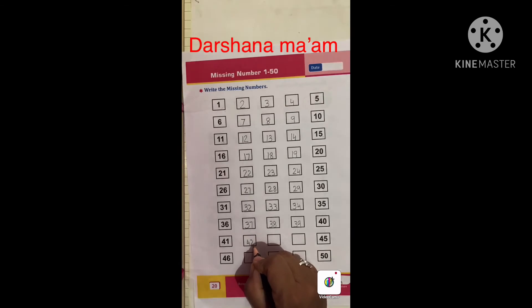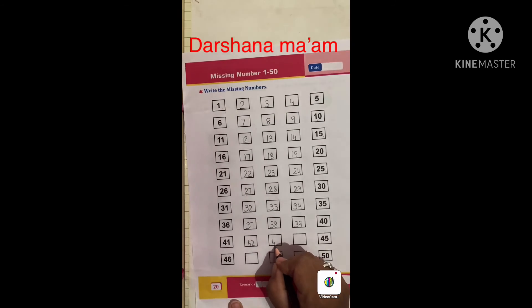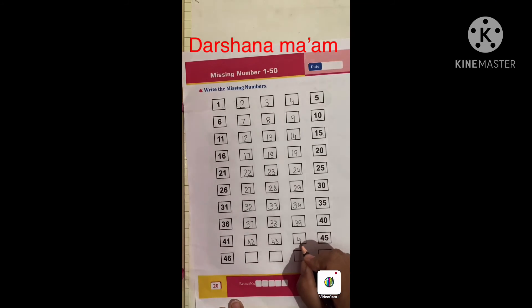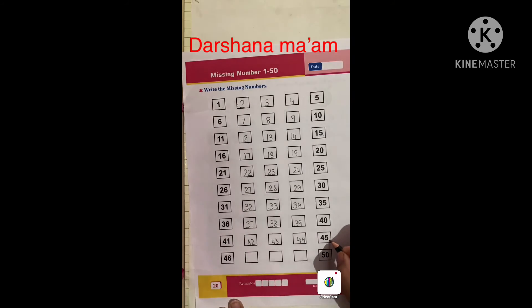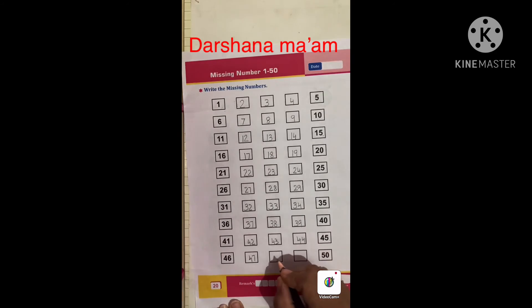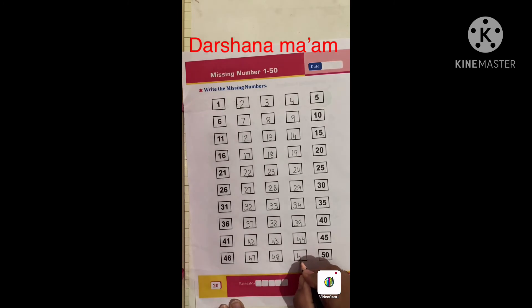Forty-two, forty-three, forty-four, forty-five, forty-six, forty-seven, forty-eight, forty-nine, fifty.